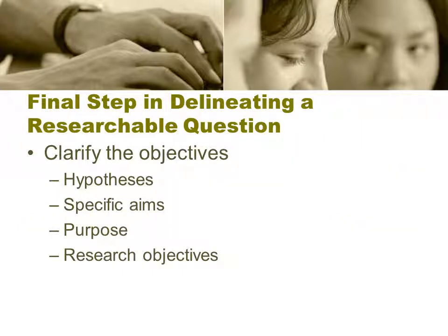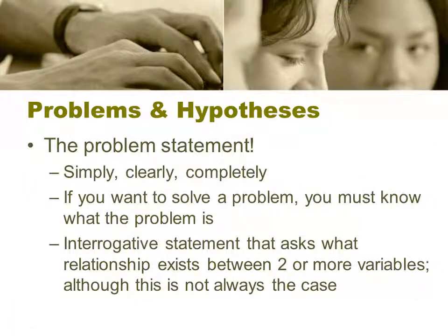The final step in delineating a research question is to clarify the objective. You're going to have a hypothesis, a specific aim, a purpose, or a research objective. The problem statement should be simple, clear, and complete. If you want to solve a problem, you must know exactly what the problem is. For a research question, you often use an interrogative statement that asks what relationship exists between two or more variables, although it's not always done that way.